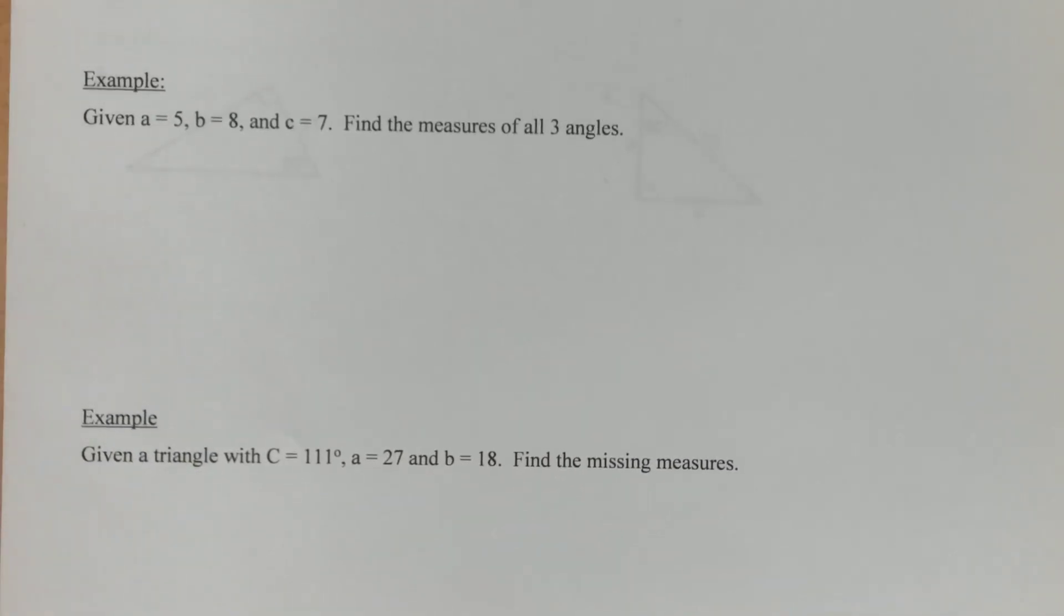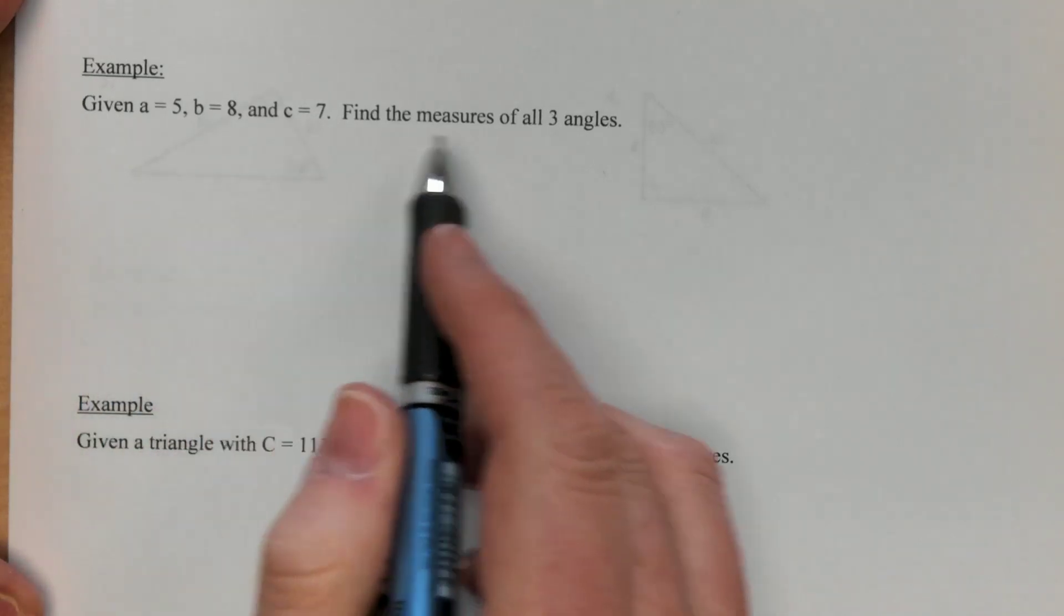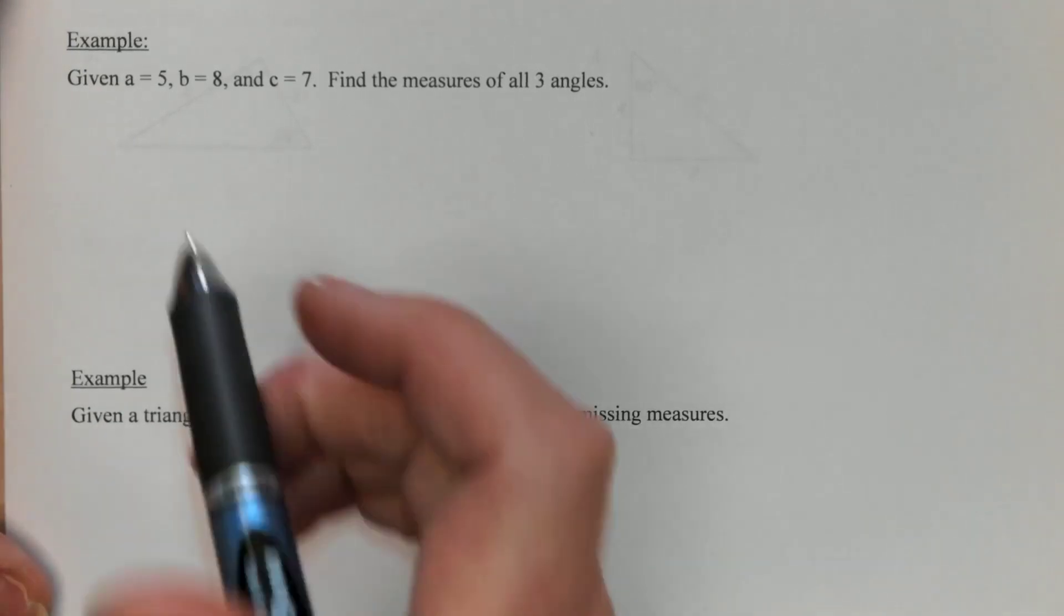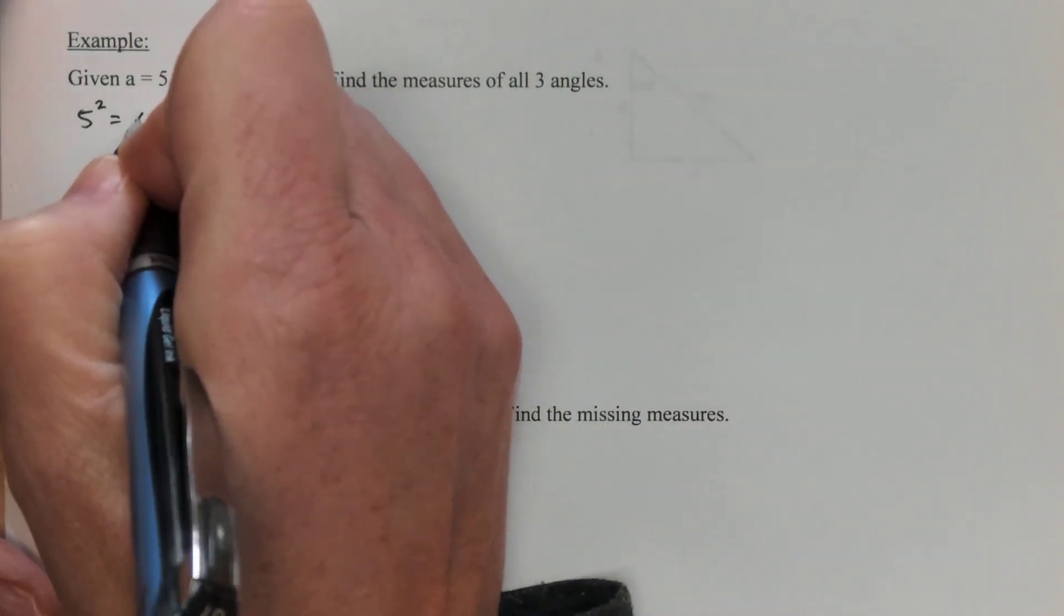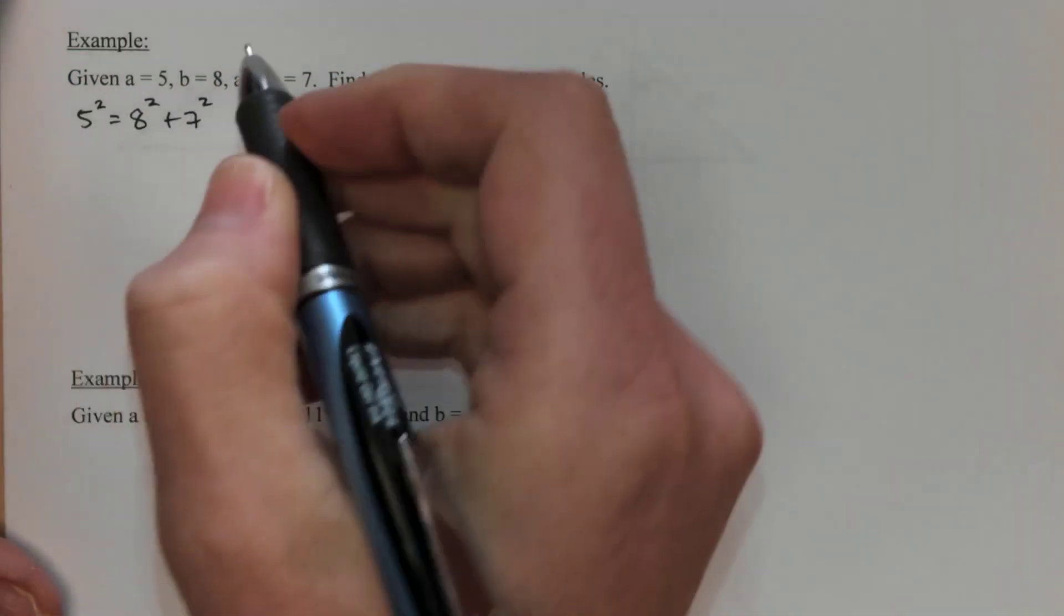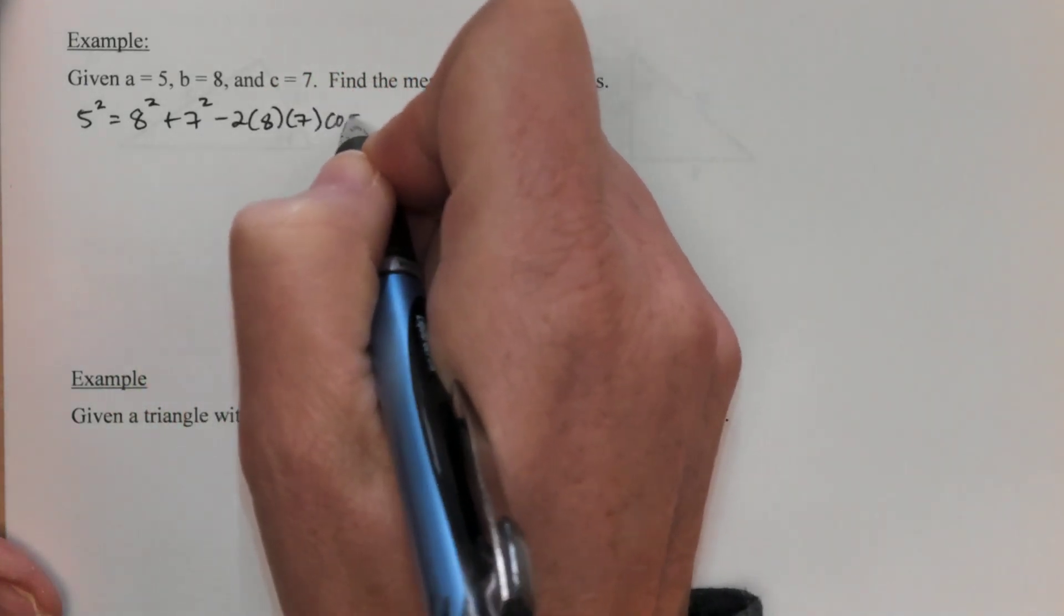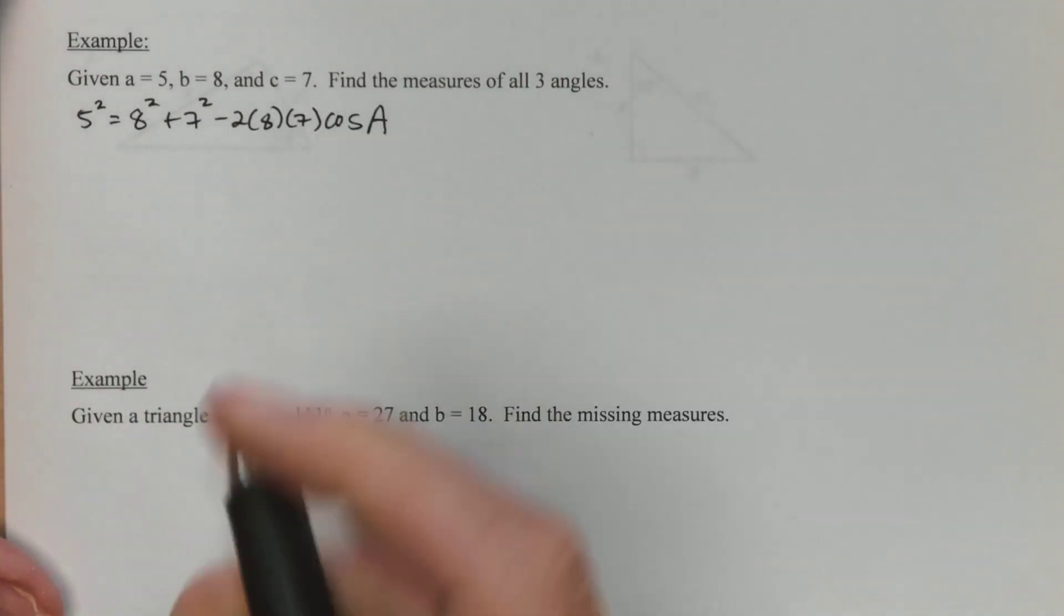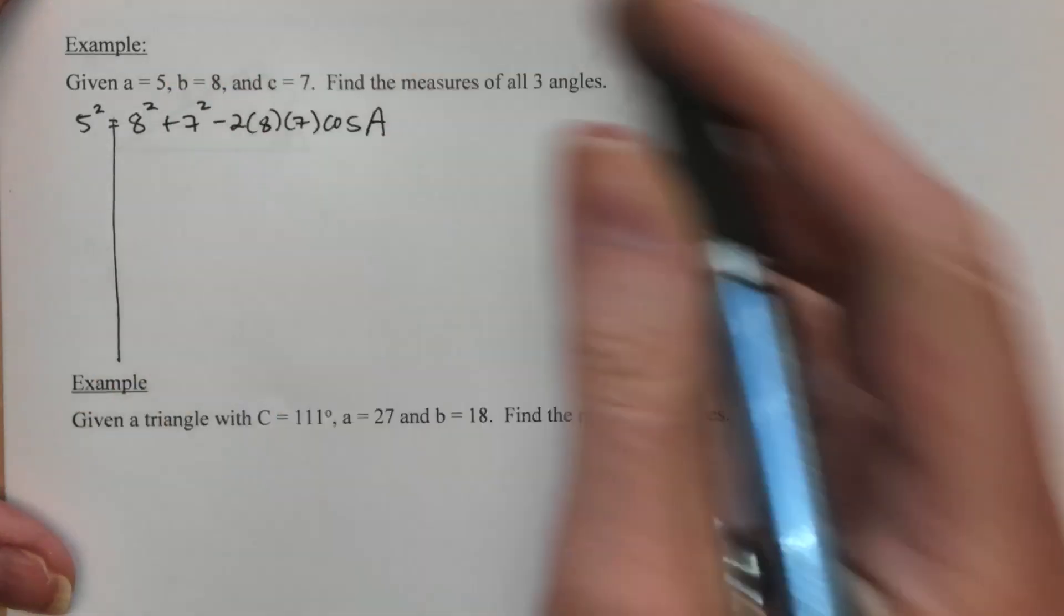So this first example has three different side measures. I know that because they're all lowercase, and it would like me to find all three of the angle measures. I'm just going to start with angle A because a comes first. So I'm going to start with 5² = 8² + 7² - 2(8)(7)cos A.